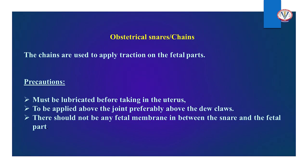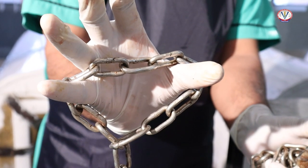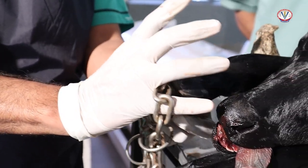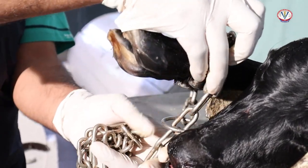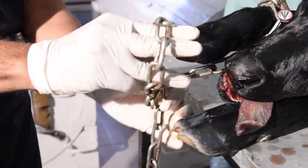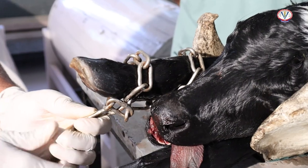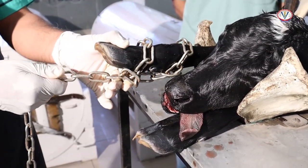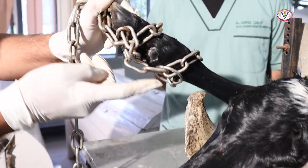Obstetrical snare or obstetrical chains are used to apply traction on the fetal parts. Precautions include ensuring the birth canal is well lubricated before taking chains into the uterus. The chain is applied above the joint, preferably above the dew claws, with no fetal membranes between the snare and the fetal part. The loop of chain is held between the thumb and little finger and fixed above the dew claws. An additional loop can be applied below the fetlock to provide stability so the joint is not dislocated or broken during moderate to severe traction.